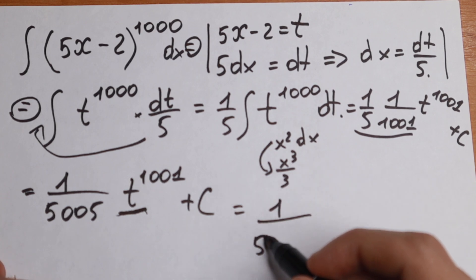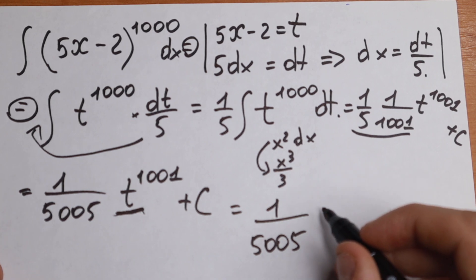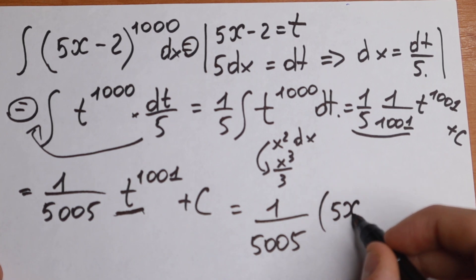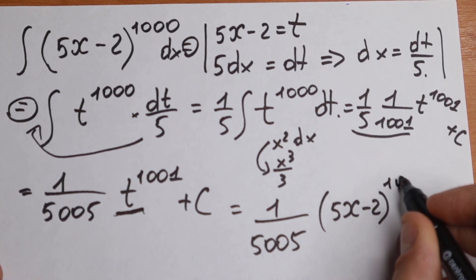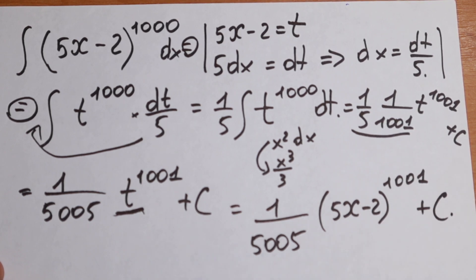1 divided by 5005, and in parenthesis, we will have 5x minus 2 to the power 1001 plus c. This will be our answer.